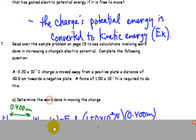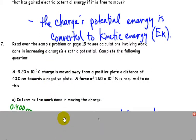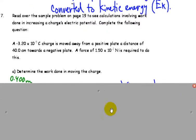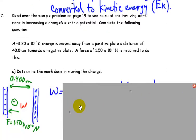Over here, in the textbook there, in the duotain, you can look at extra questions there. I'm going to go through a few here, though, the main ones. A negative 3.20 times 10 to the minus 5 Coulomb charge is moved away from a positive plate, a distance of 40 centimeters towards a negative plate. A force of 1.50 times 10 to the minus 2 Newtons is required to do this. What is the work done in moving the charge? So, this is the scenario here.